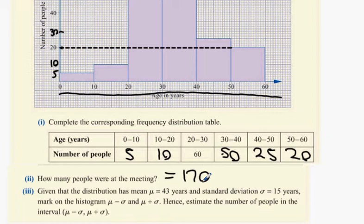Would everybody be confident drawing that in the opposite direction? If I gave you the table, zero to ten means draw from zero to ten, go up five. Ten to twenty means continue from ten to twenty, go up to ten because there's ten people. Given that the distribution has a mean of 43 and a standard deviation of 15, what's 43 minus 15? That's 28. And 43 plus 15 is 58.